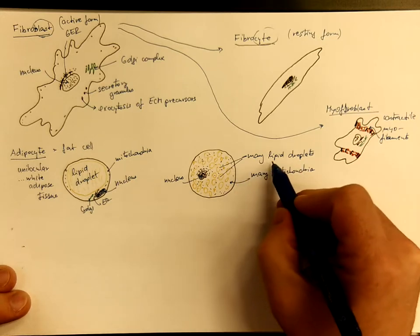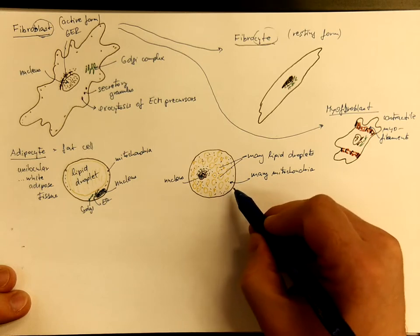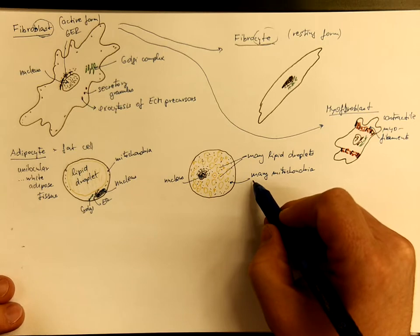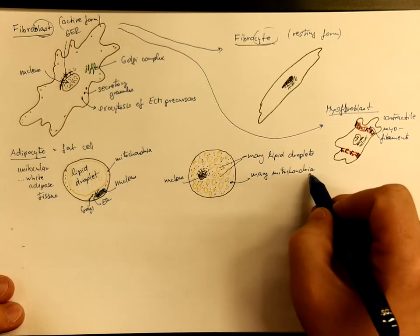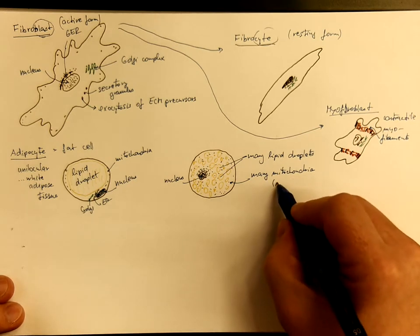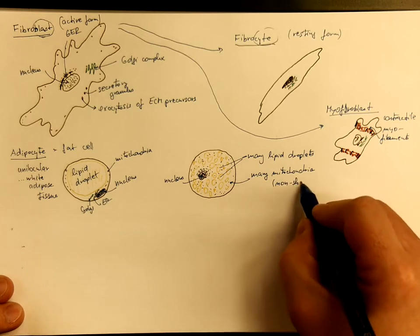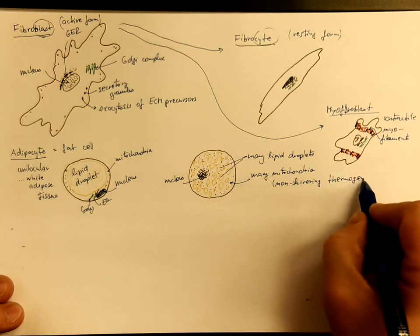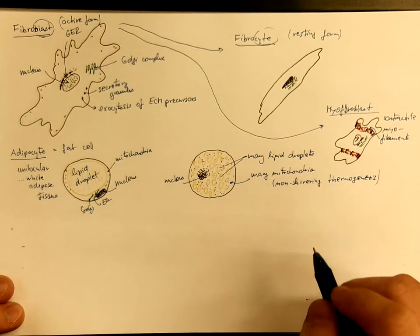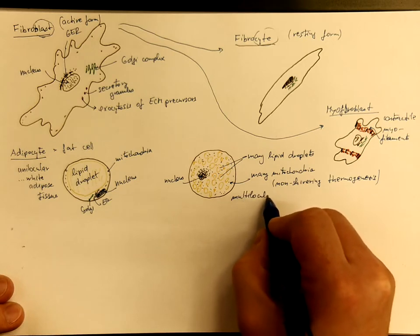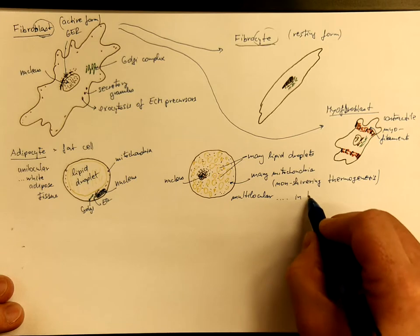Where these lipids are utilized, but the chemical energy is directly transformed to heat. It is not used for oxidative phosphorylation and ATP production, but rather for direct heat production. This process is called non-shivering thermogenesis. These types of adipocytes are called multilocular and they occur in brown adipose tissue.